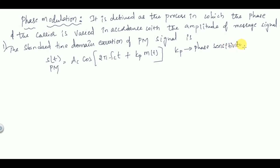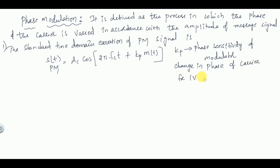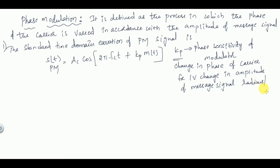kp represents the phase sensitivity of the modulator. It represents the change in phase of the carrier for one volt change in amplitude of the message signal. Its units are radians per volt. So phase modulation is voltage-to-phase conversion.